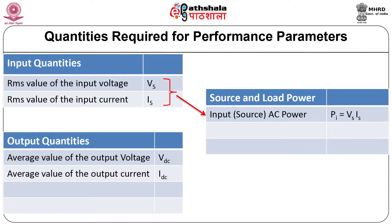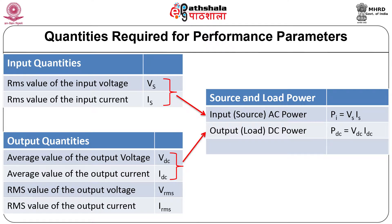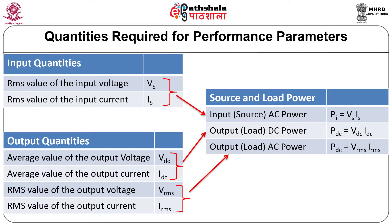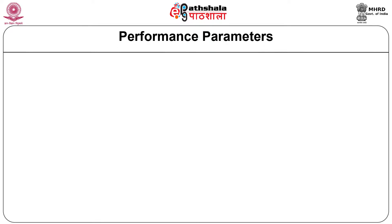From this, we can determine the output power which is DC power, but it is not pure DC — it has some ripple. Therefore, one has to determine the RMS values. From these waveforms, one can determine the RMS value of voltage and current, and from this we will know about the output AC power. From these six quantities, we can determine most of the performance parameters. First is efficiency: efficiency is output DC power divided by output AC power.